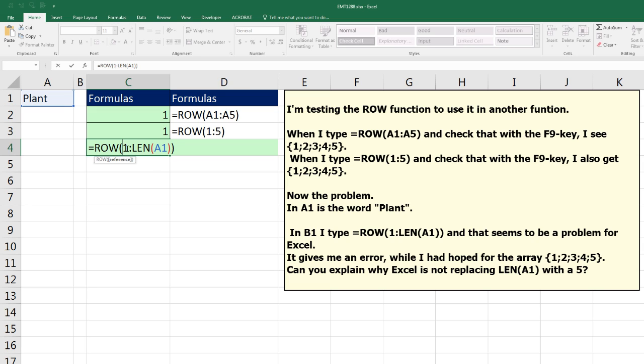Two things we have to do. The first thing is we have to put the 1 and the colon into double quotes, and then join it to the LEN. Any time you have some text or numbers in a formula, it's going to try to find a function name, or a defined name, or a cell reference. And one colon wasn't working. So we needed to force it to be text, and then join it to the LEN.